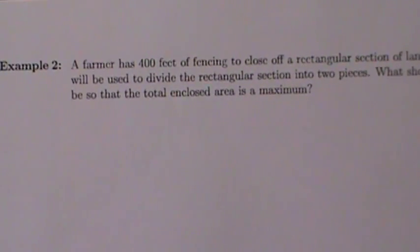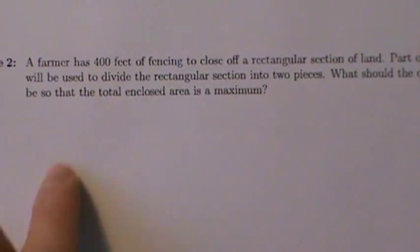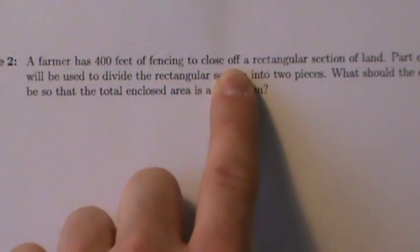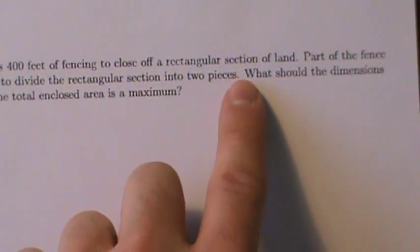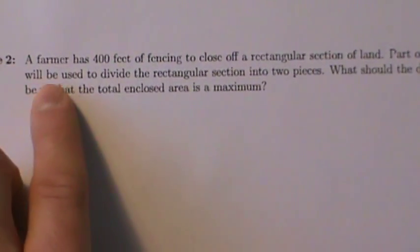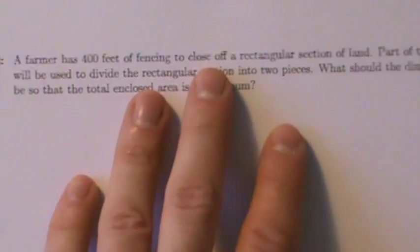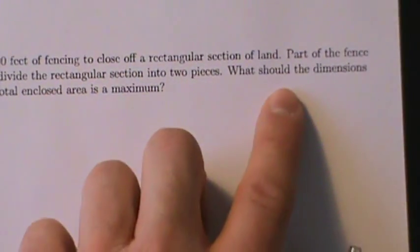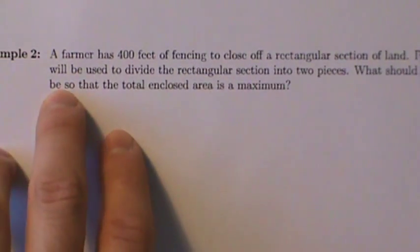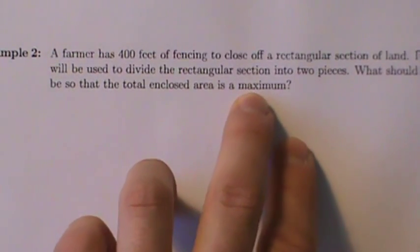This is example two with applied optimization. A farmer has 400 feet of fencing to close off a rectangular section of land. Part of the fence will be used to divide the rectangular section into two pieces. We want to know what the dimensions should be so that the total enclosed area is a maximum.